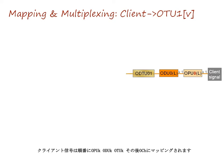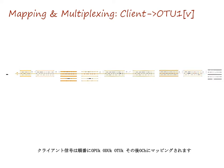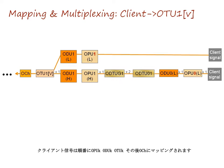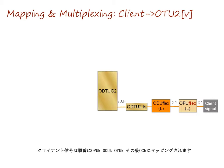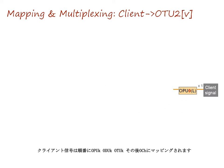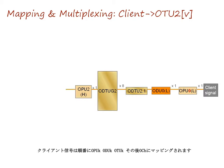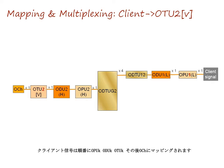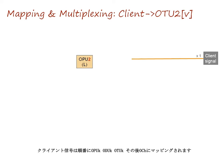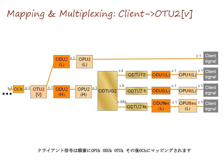Client signals are mapped to OP-UK, OD-UK, and OT-UK in sequence and then to OCH. Client signals are mapped to OP-UK, OD-UK, and OT-UK.